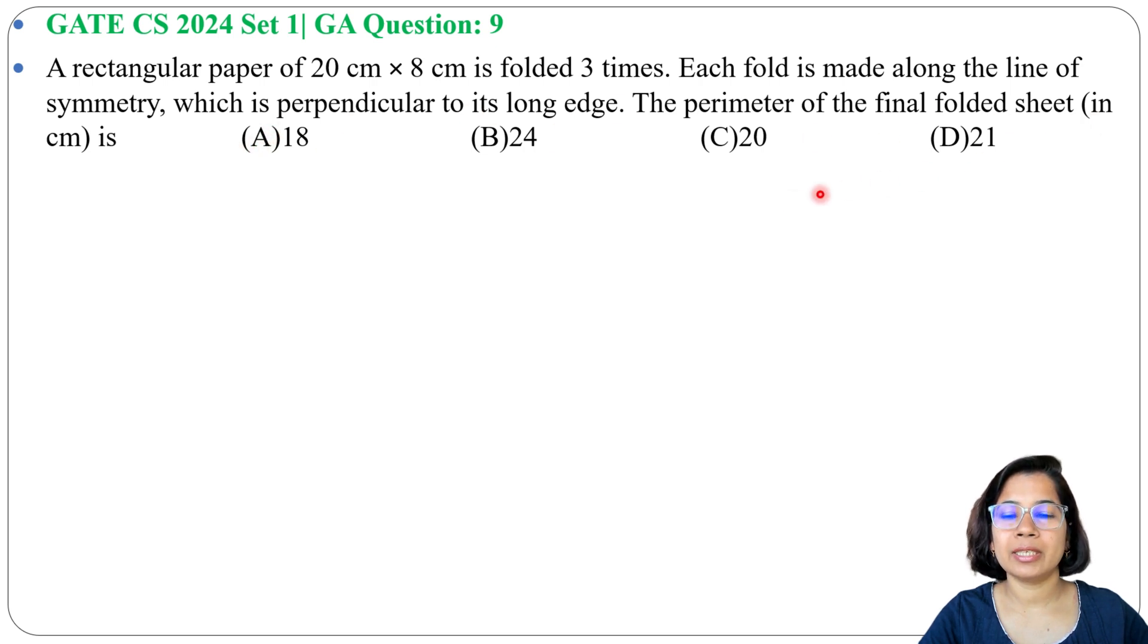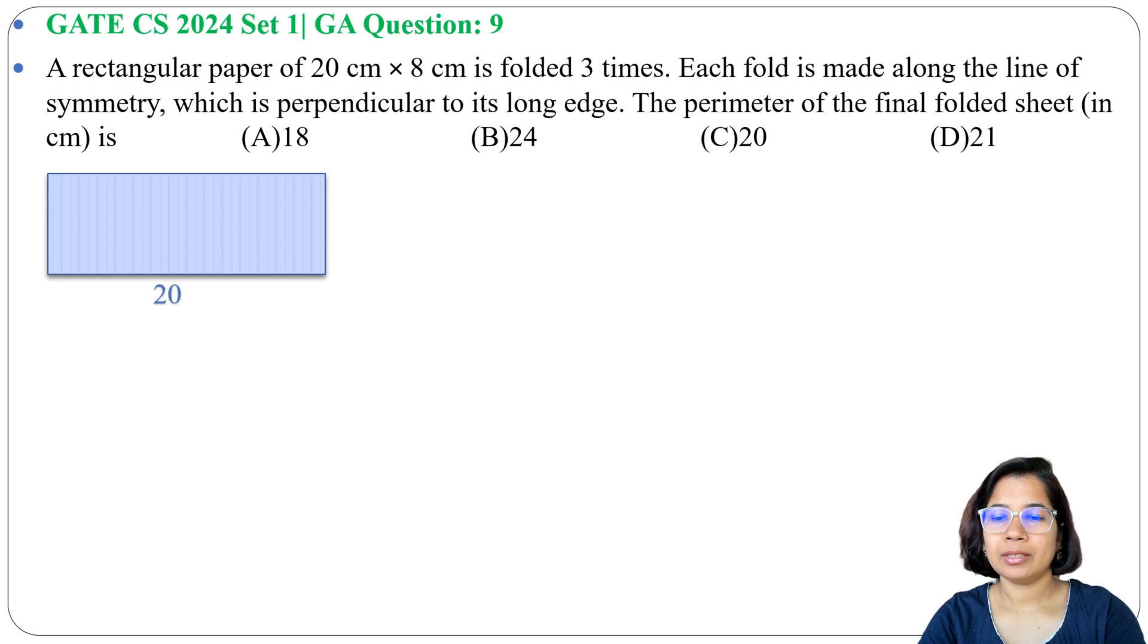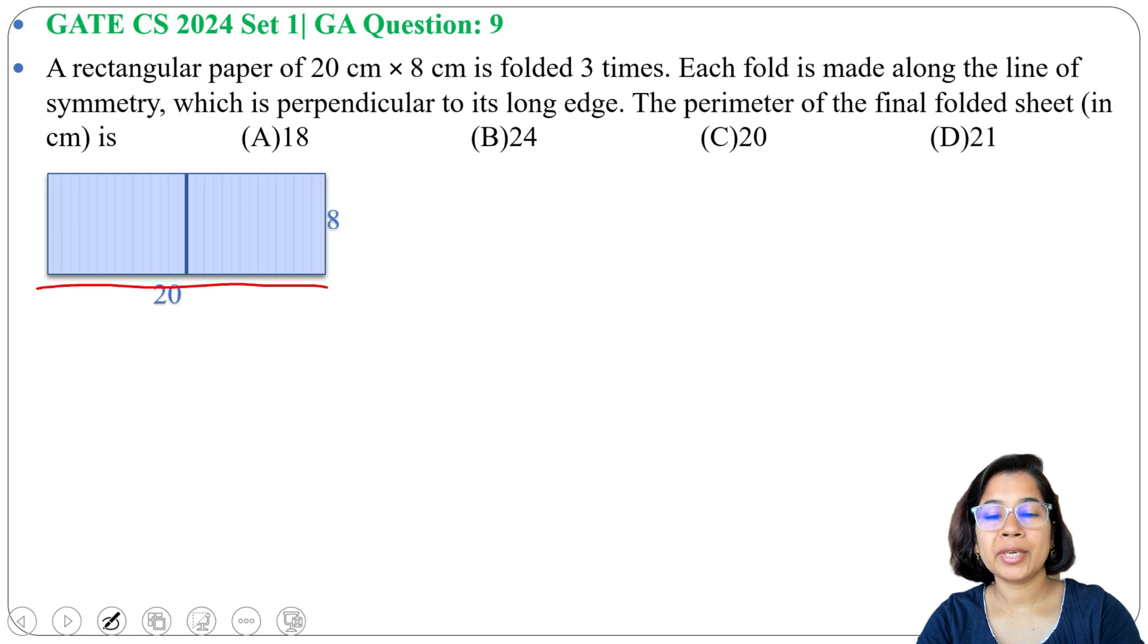Four options are given. So we have a rectangular paper 20 × 8 cm. Here the longest one is 20 and this height is 8 cm. We will fold 3 times and each time fold will be in the longest edge. Here this 20 is the longest edge so fold will be perpendicular to this longest edge.